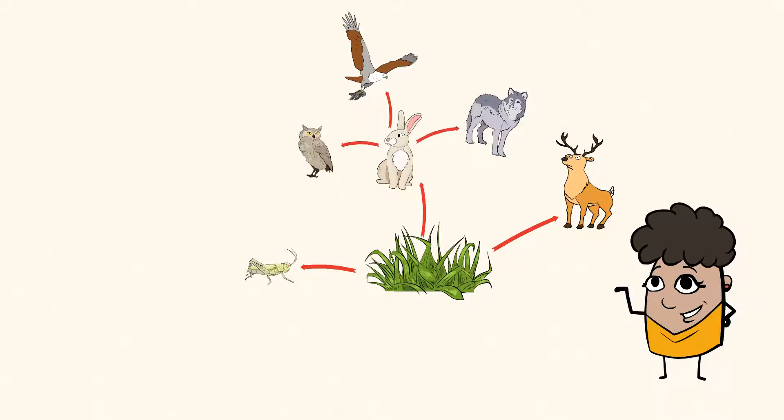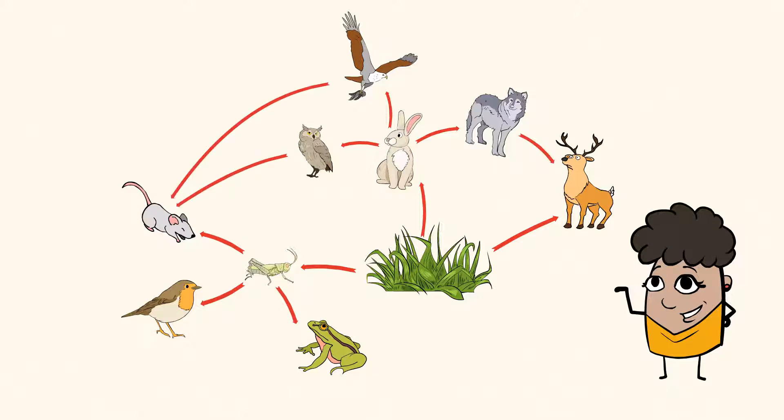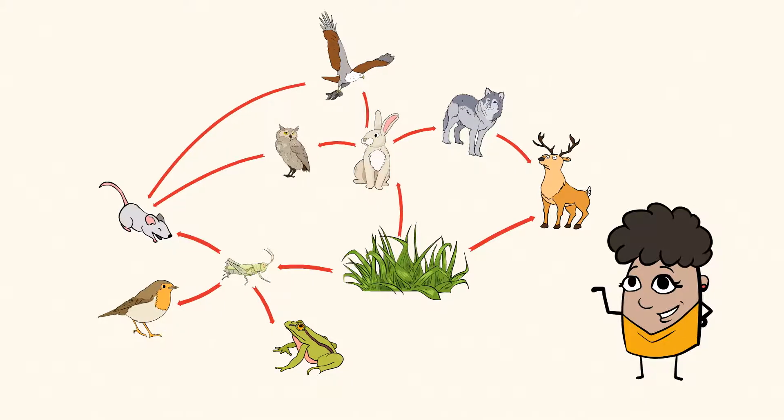Back to the grasshopper. It can be a meal for a mouse as well as a robin or a frog. So as you can see, all of these living things depend on one another for survival. And they are connected through many strings. Not just one ladder.